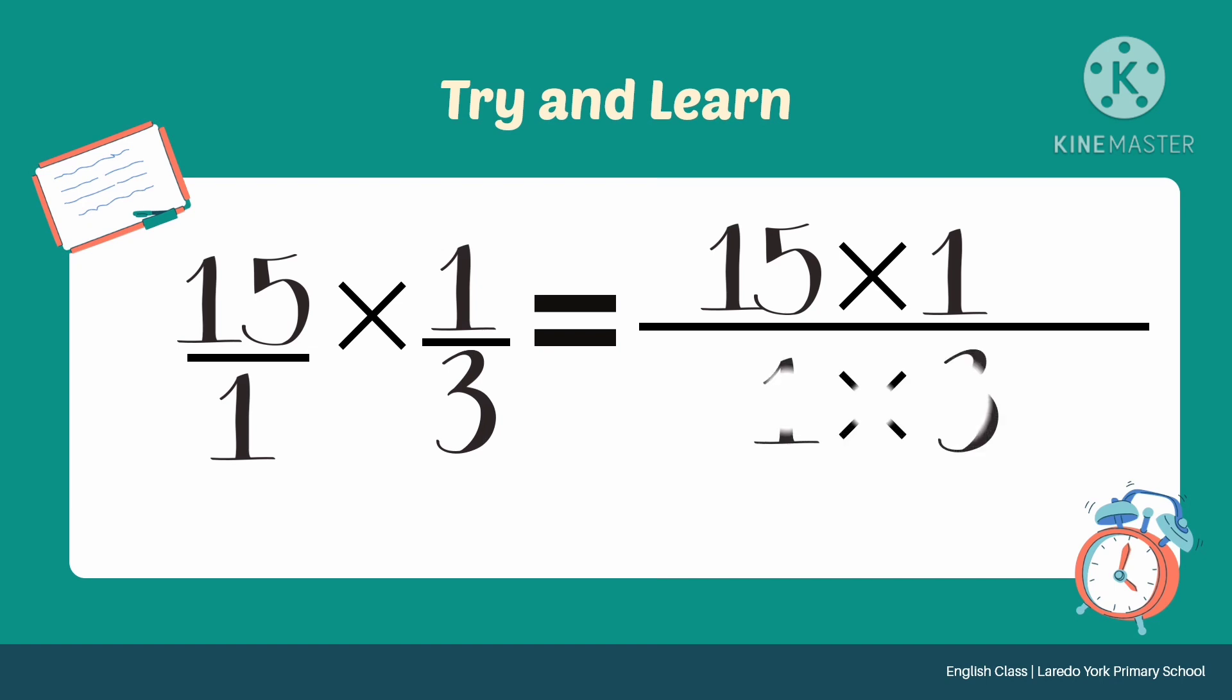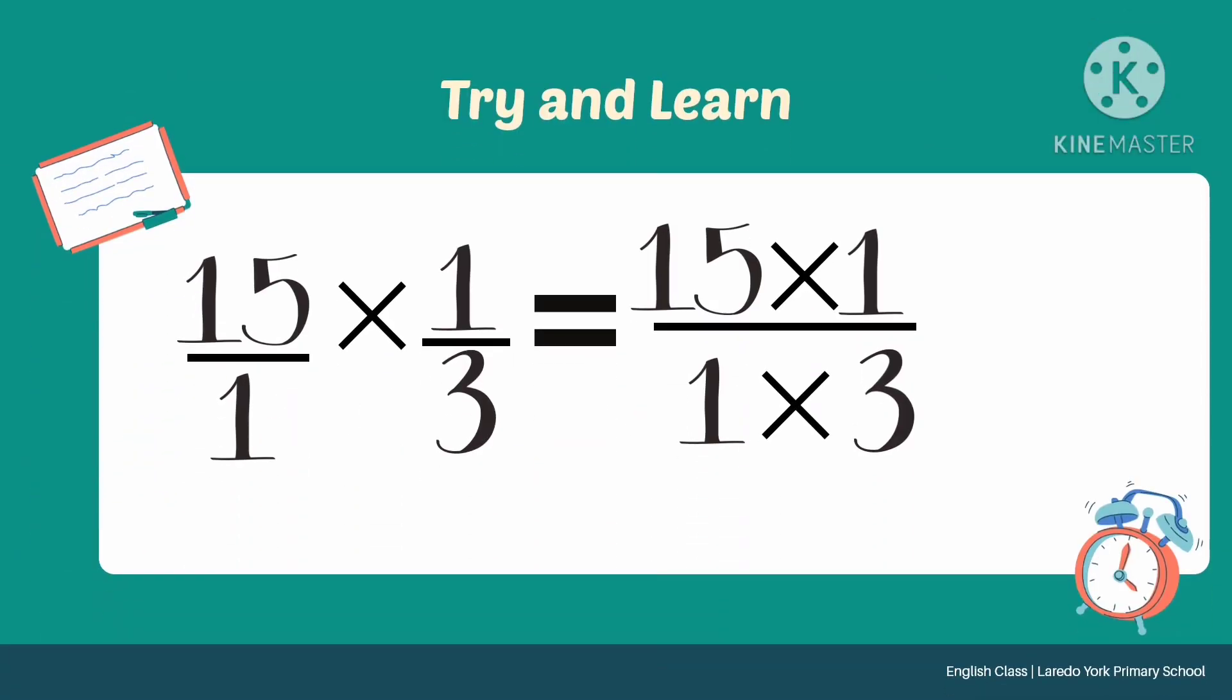Then multiply the denominators. The denominators are 1 and 3, so 1 times 3. Proceed na tayo sa pagmamultiply ng numerators. 15 times 1 is 15. Then multiply the denominators. 1 times 3 is 3.